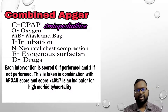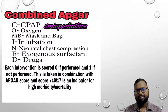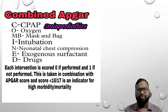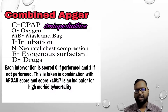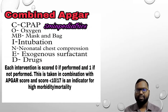Now let's discuss what is the meaning of COMBINED. C for CPAP, O for oxygen, M-B for mask and bag, I for intubation, N for chest compression, E for exogenous surfactant, and D for drug. For each intervention, a score of zero is given if performed and one if not performed. This is taken in combination with the APGAR score, and a score less than 10 out of 70 is an indicator for high morbidity and mortality.